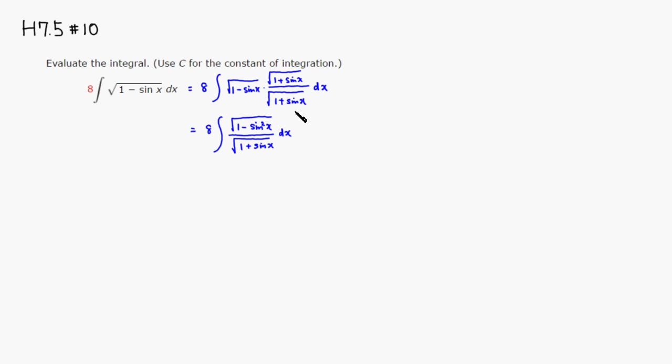The good thing about this is that here, the numerator, 1 minus sine squared is cosine squared. With the square root, this is just going to be cosine of x. Then we can use the substitution.